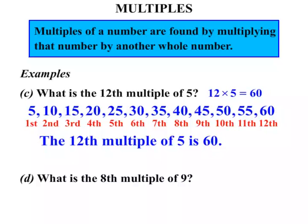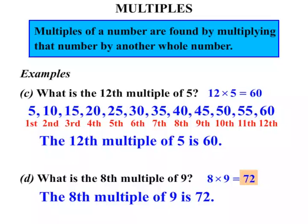What is the eighth multiple of 9? Well let's do it the quick way. Eighth multiple of 9, we're going to be thinking 8 times 9, and 8 times 9 of course equals 72. So we can then say that the eighth multiple of 9 is 72.